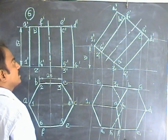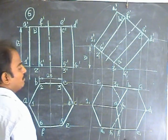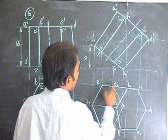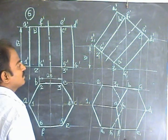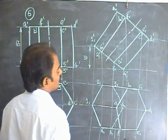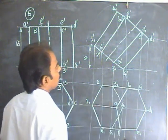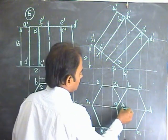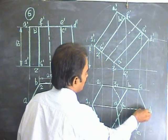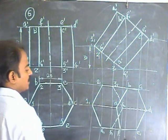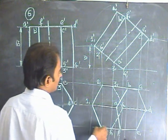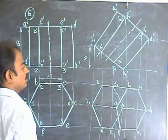Similarly, connect 2 and B. 2 and B is invisible, mark as dotted line. 3 and C is again invisible, locate 3 and C. 4 and D is also invisible, put dotted line. 5 and E is edge, leave it. 6 and F is also edge, leave that also.